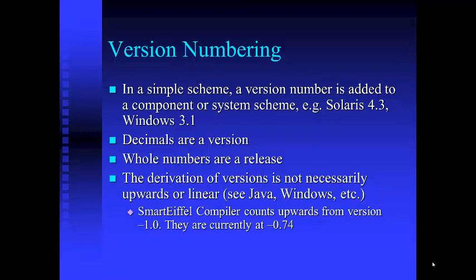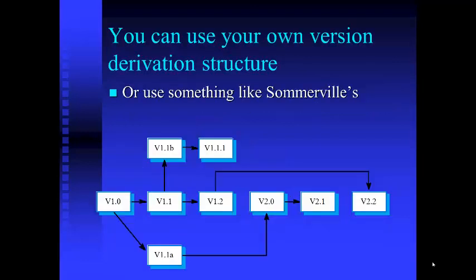Java 1.0, 1.1, 1.2 — pretty good so far. Then it was Java 2, which became Java 2 Standard Edition, Java 2 Micro Edition, Java 2 Enterprise Edition. Then Java 2 Standard Edition became Java 3 Standard Edition, but instead they did it as Java 2 Standard Edition 1.3 and likewise 1.4 — basically insanity at some point. Using Somerville's scheme, the version is the number after the decimal and the release is the number before the decimal.